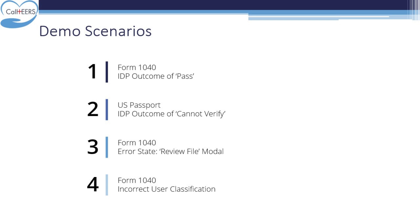IDP is designed to automate the verification of different document types and perform eligibility determination in near real-time. The system processes documents related to income, citizenship, lawful presence, and non-incarceration. The IDP system takes only four to seven seconds to perform automated verification of documents.